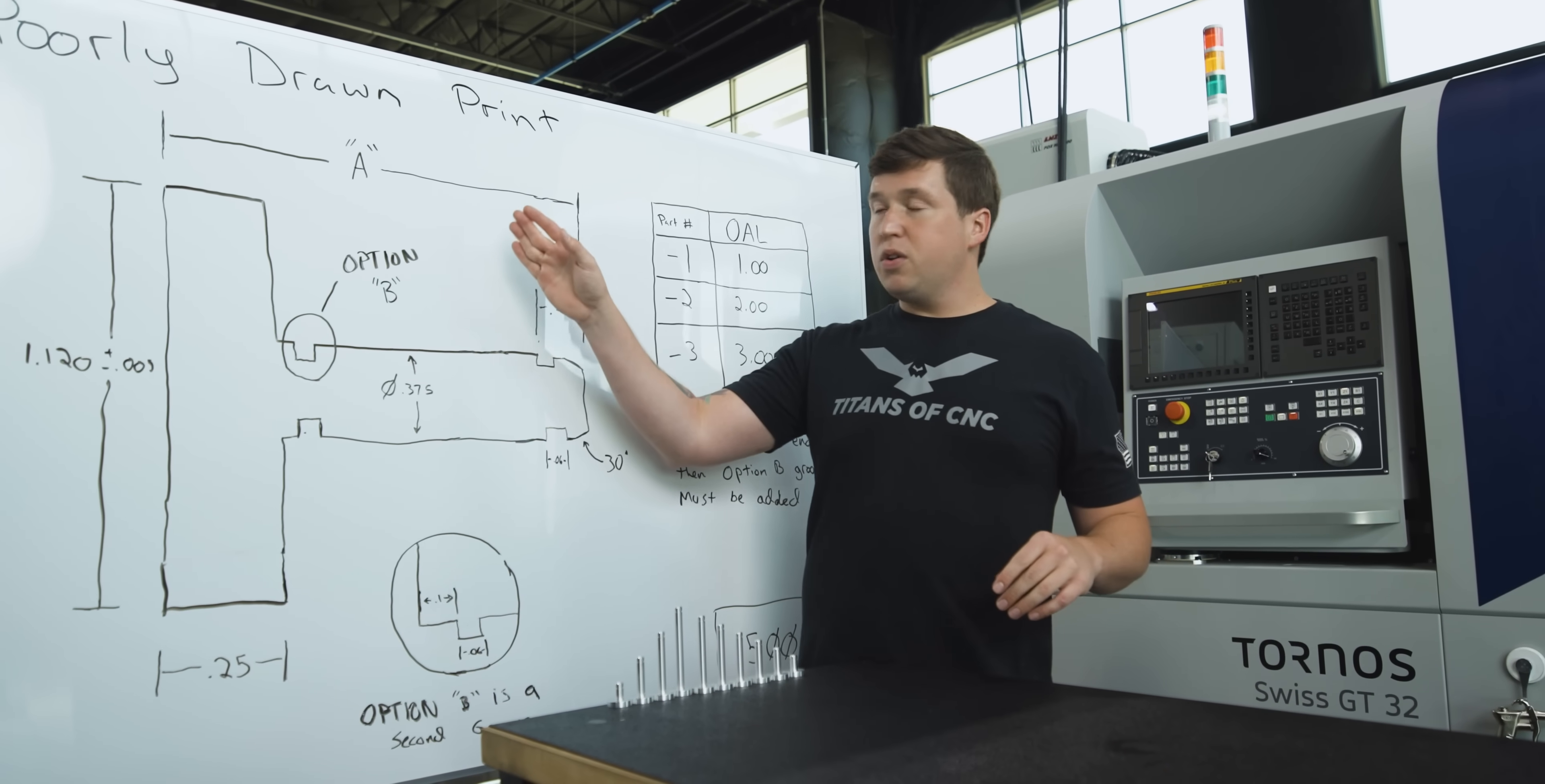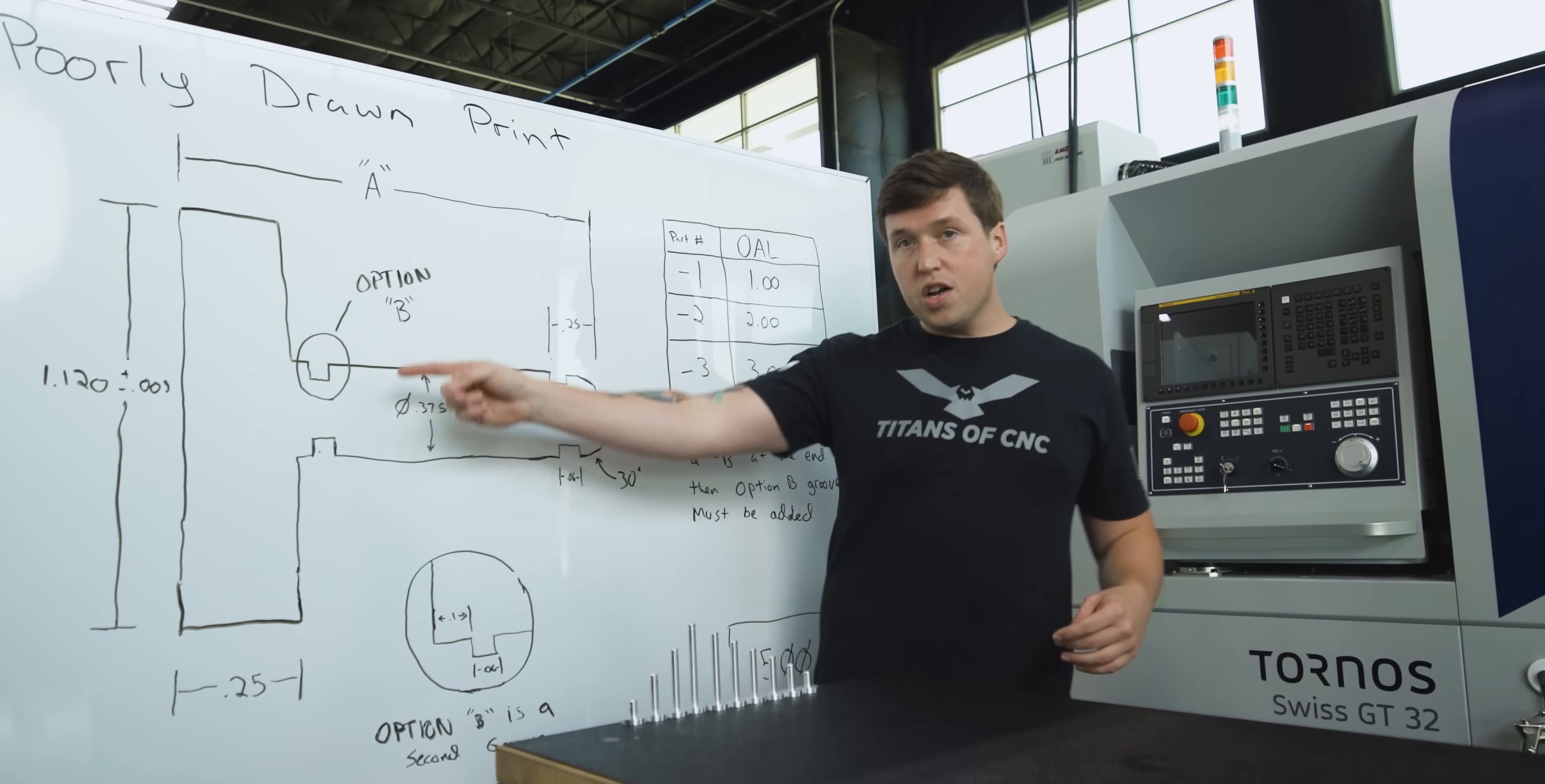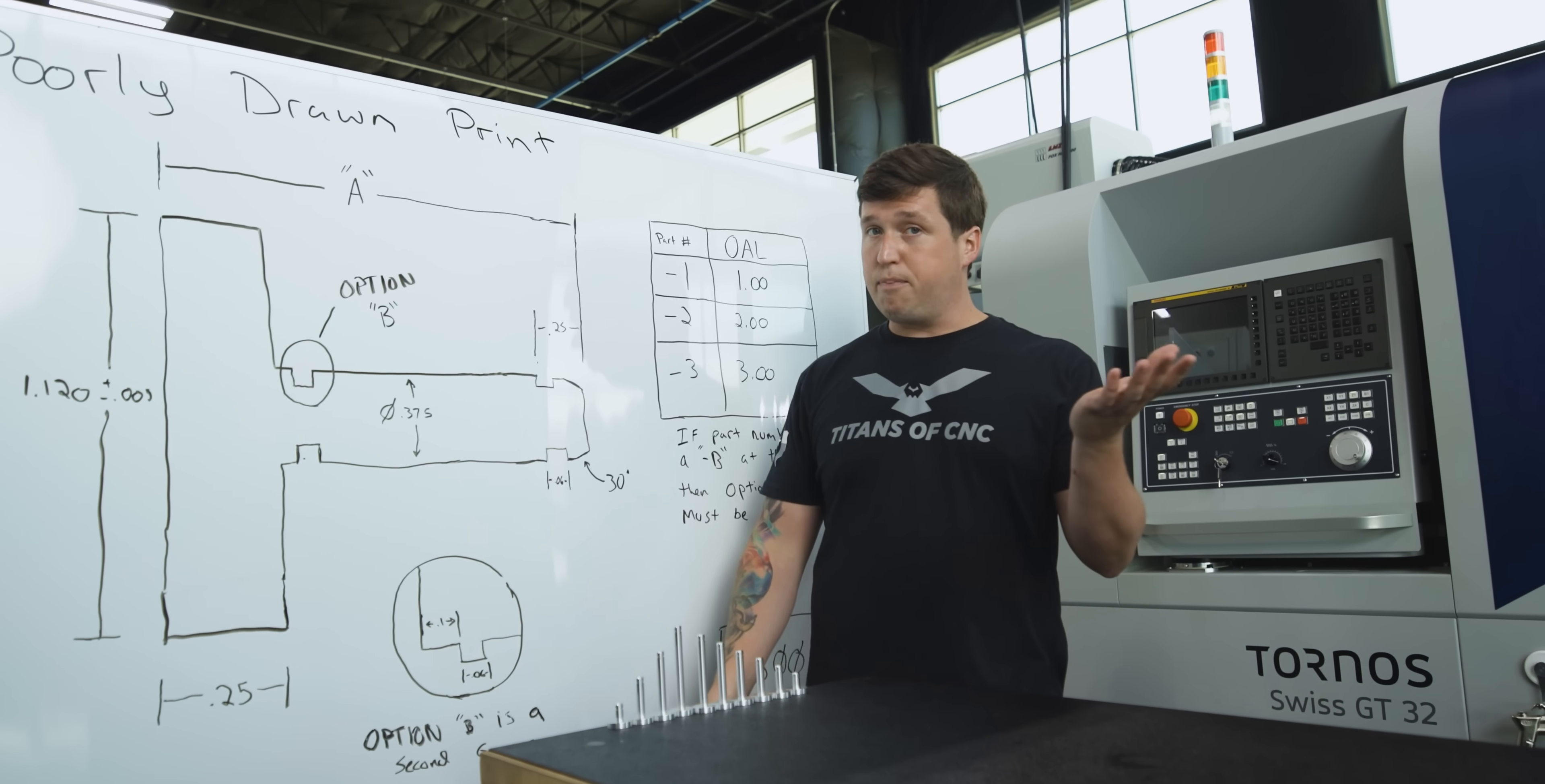You have a part over here and they give you a length that's a variable. Over here they give you a table showing the possibilities. You also sometimes have an optional groove like this. Some parts will have it, some parts won't.